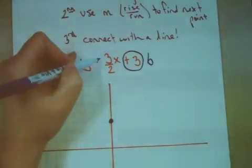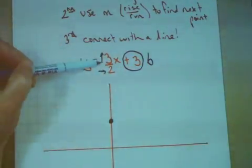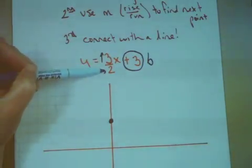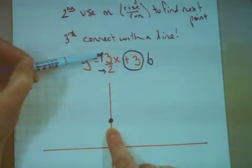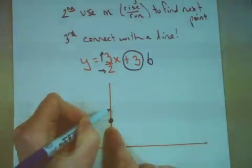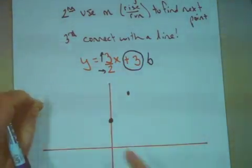The second thing I look at is my slope. Remember, that slope represents rise over run. So from the existing point I need to go up 3 and to the right 2. 1, 2, 3, 1, 2. I put another nice big fat dot.